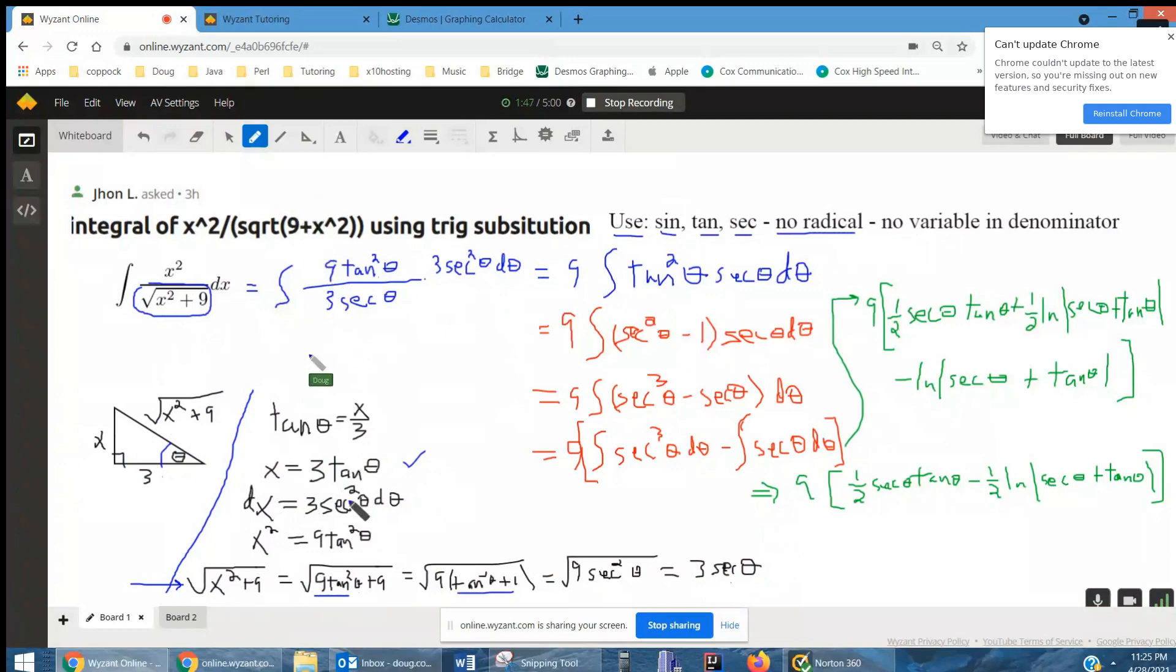So the x squared becomes 9 tangent squared theta. The radical in the denominator becomes 3 secant theta. And dx becomes 3 secant squared theta d theta.